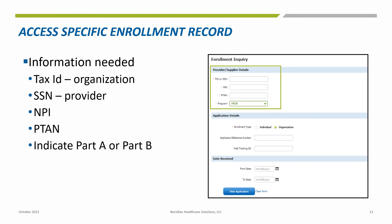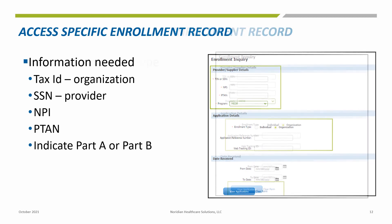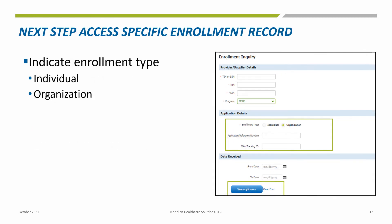Under the enrollment area, to access the records you want, you will need the tax ID of the group or the social security number of the individual, the NPI that goes with the tax ID or individual, a PTAN, and determination of program — Part A or Part B. If you have a specific application or tracking ID you're investigating, enter that information. An application number or tracking ID can be placed in these fields to narrow down information when searching. A date can be selected as well to narrow the search, though this is not required when searching for applications.